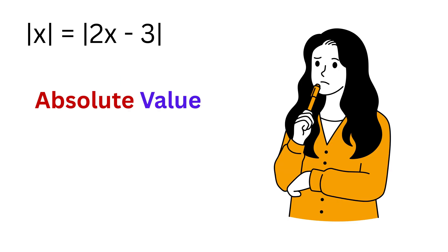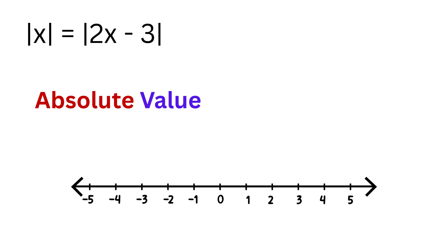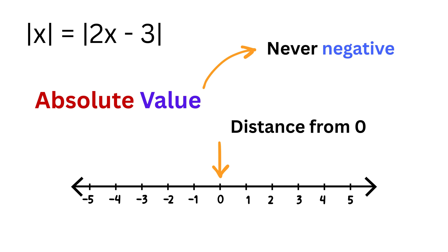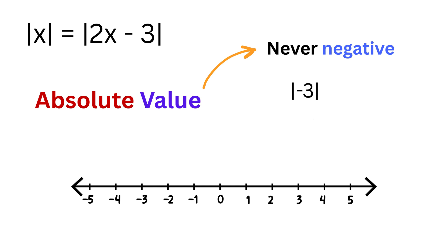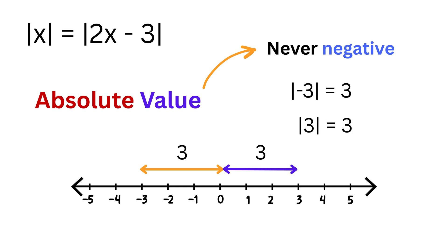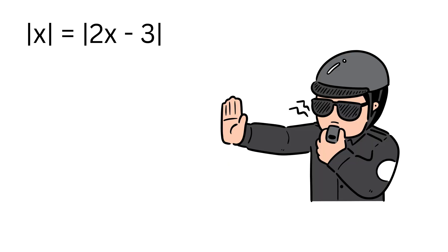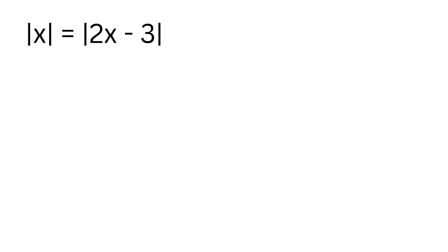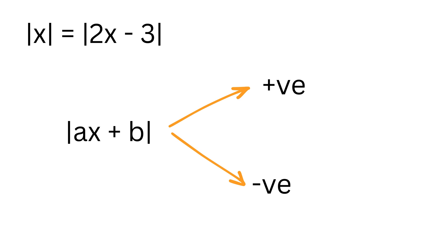First of all, what does absolute value mean? Draw a number line like this. Think of absolute value as the distance from zero on a number line — this means it is never negative. For example, the absolute value of negative three is just the distance of negative three from zero on a number line, and thus it is three. And the absolute value of three is simply three. Now before we jump into solving, let's really understand how absolute value works. When the inside is something like a times x plus b, the rule is simple: the absolute value just checks whether the inside is positive or negative.